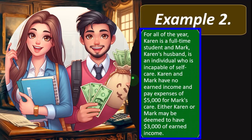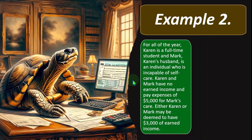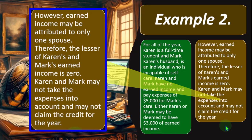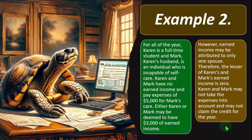Example two: Karen is a full-time student all year and Mark, Karen's husband, is an individual incapable of self-care. Karen and Mark have no earned income and pay $5,000 for Mark's care. Either Karen or Mark may be deemed to have $3,000 of earned income; however, the deemed income may be attributed to only one spouse. Therefore, the lesser of their earned income is zero, and Karen and Mark may not take the expenses into account — they cannot claim the credit for the year.